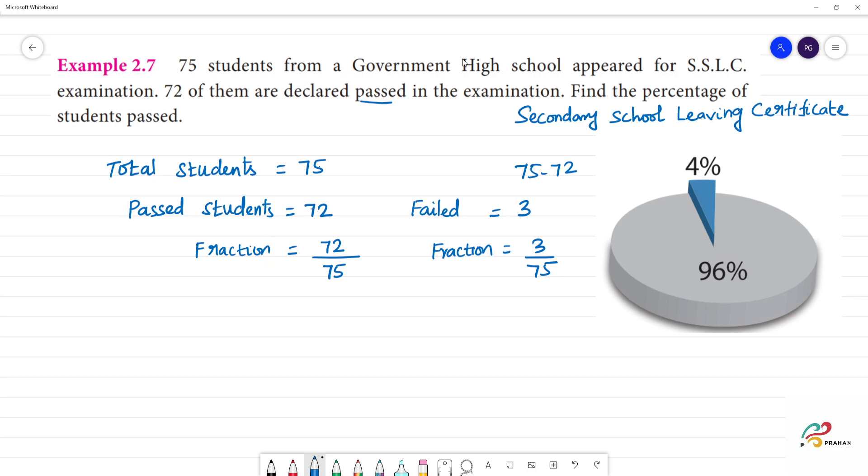Now, if we look at percentage, we look at fraction to percentage. Multiply by 100. 72 by 75 multiplied by 100. Now, this is 4 times 25, this is 3 times 25.